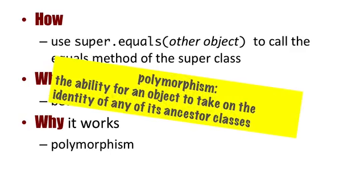Polymorphism, another term commonly used in object-oriented programming, allows a subclass to take on the identity of any of its ancestor classes.